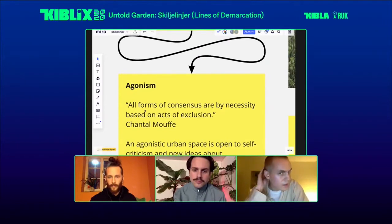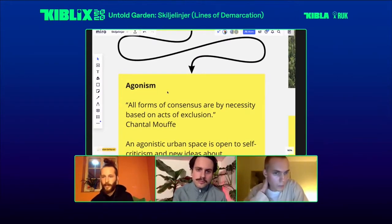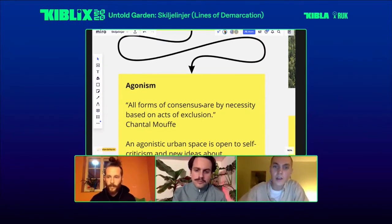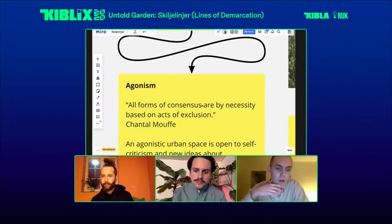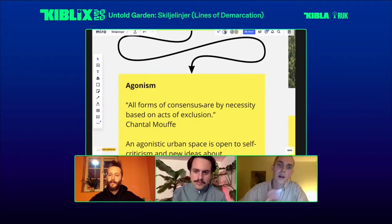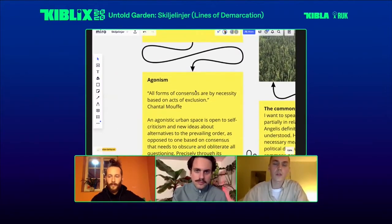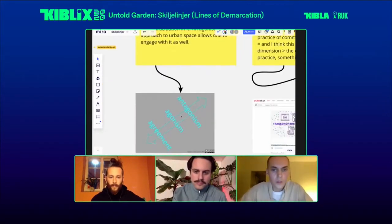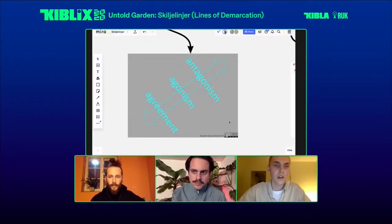I would like to start with the concept of agonism, something that Jakob approached earlier when he told you about the reason for the name Skilje Linje. On the Miro board, we have a quote by the Belgian political theorist Chantal Mouffe: 'All forms of consensus are by necessity based on acts of exclusion.' Agonism might be described as the space somewhere between antagonism and consensus — discourse amongst adversaries rather than between enemies. In terms of game theory or sports, agonism is a conflict between opponents who incite mutual struggle, respect and admiration.